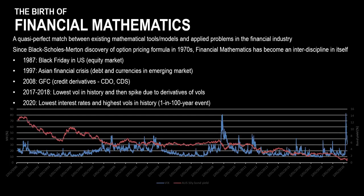Financial mathematics is a very young area of mathematics that has developed since about the 1970s with the discovery of the Black-Scholes-Merton option pricing formula. The option pricing formula itself is very impactful and famous, and these guys went on to win a Nobel Prize in the 90s because of it. Financial mathematics is all about modeling the uncertainties in the up and down of the financial market.